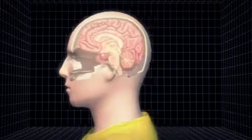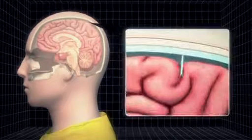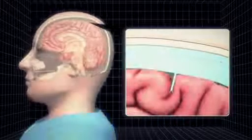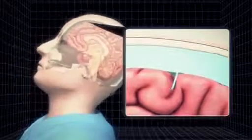As a person ages, their brain tissue shrinks, straining bridging veins, blood vessels that extend from the brain to the skull and leaving them vulnerable to tearing.